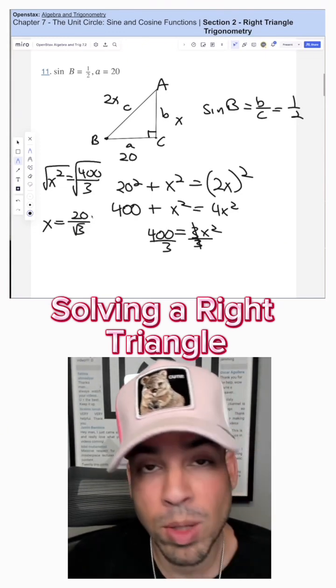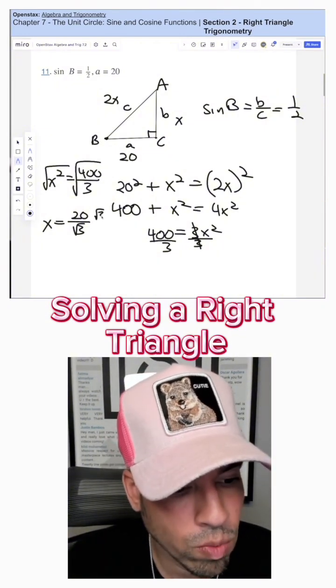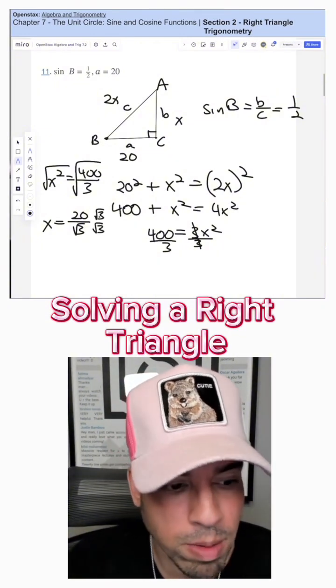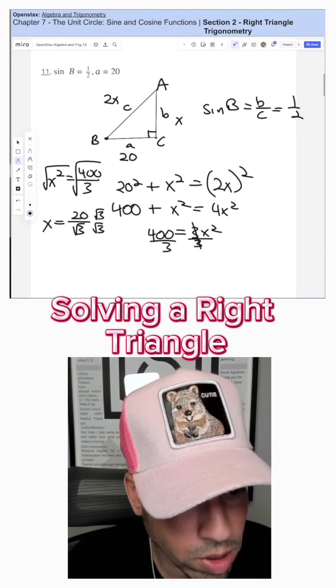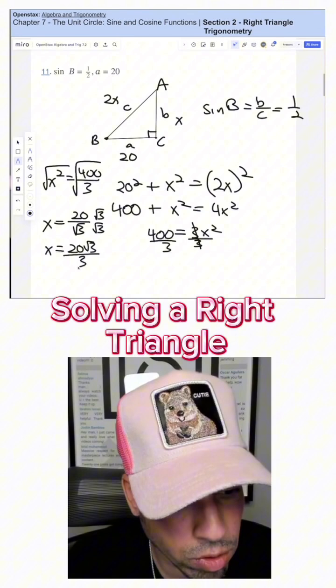Just to rationalize this, by the way, we could say plus or minus, but this is length, so we don't have to worry about a negative. So then I'm going to rationalize the denominator by multiplying by rad 3 over rad 3. So then I get X equals 20 rad 3 over 3.